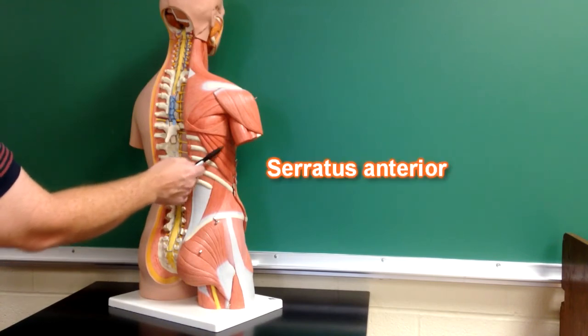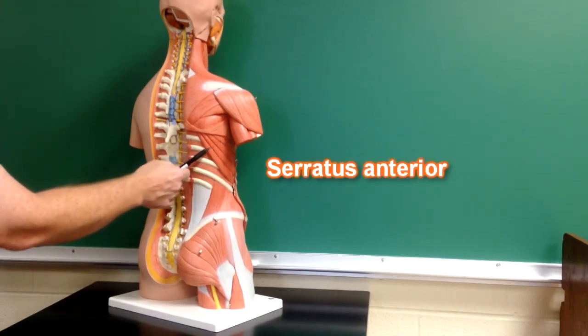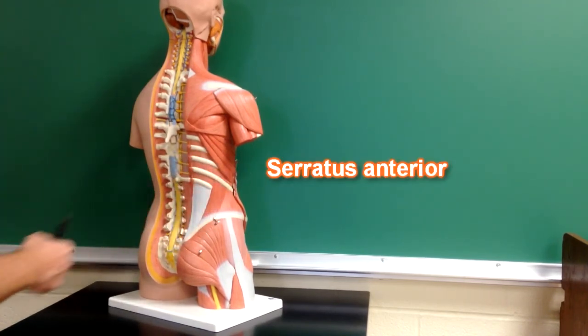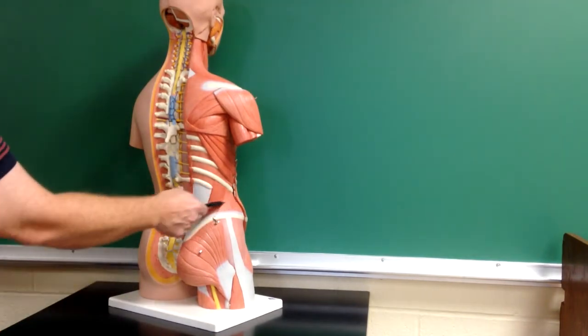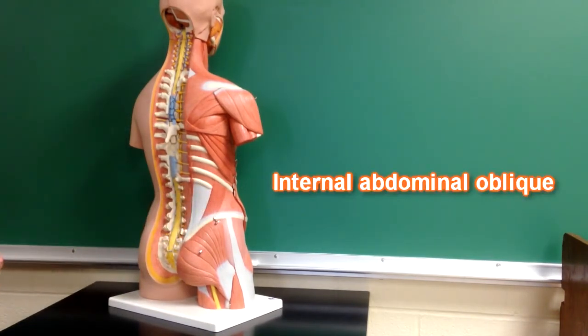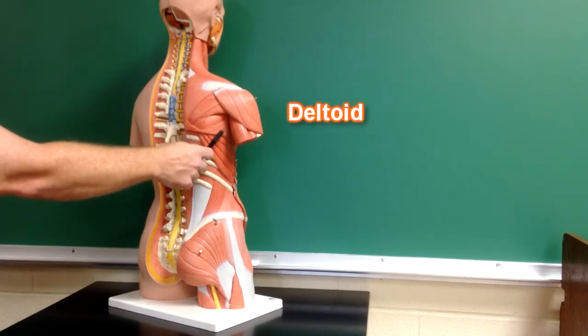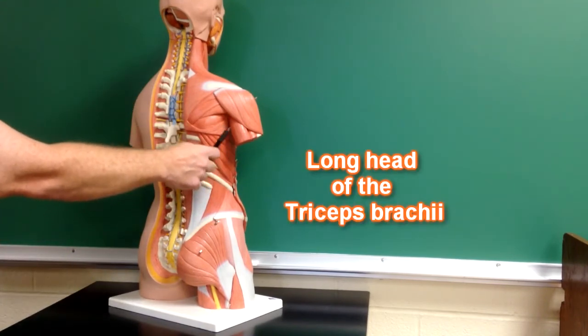These would be fibers of serratus anterior reaching around and grabbing onto the ribs. These fibers right here would be fibers of the internal abdominal oblique. We can also see deltoid here, long head of the triceps here.